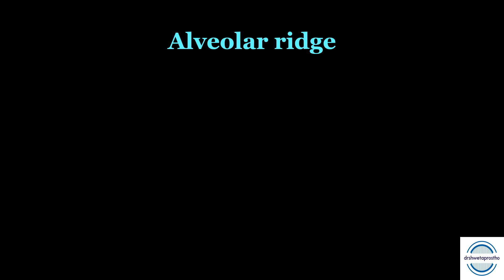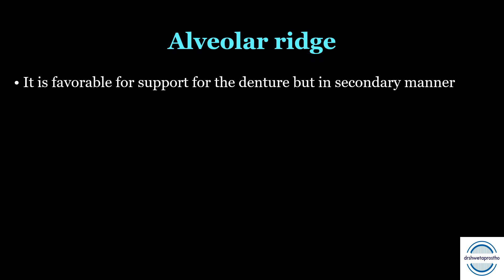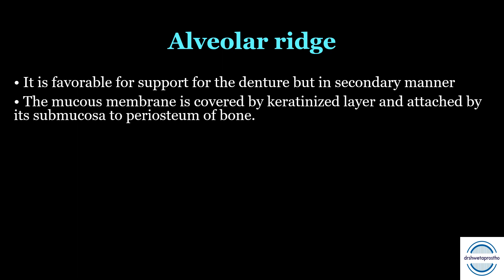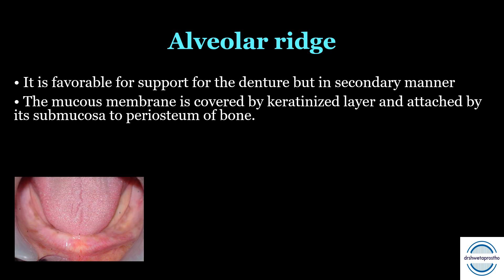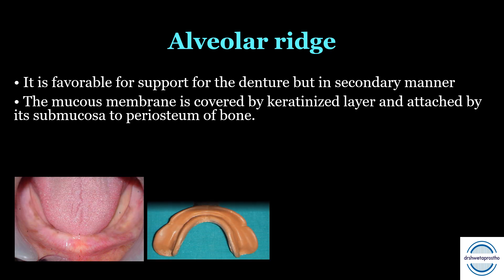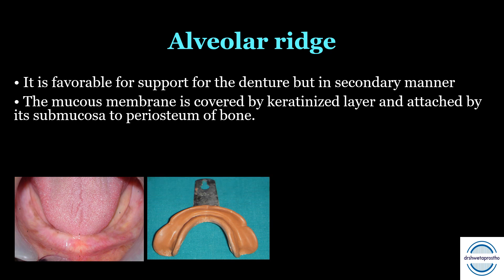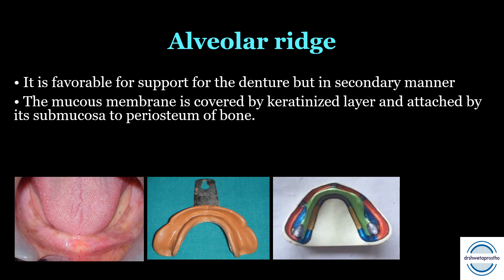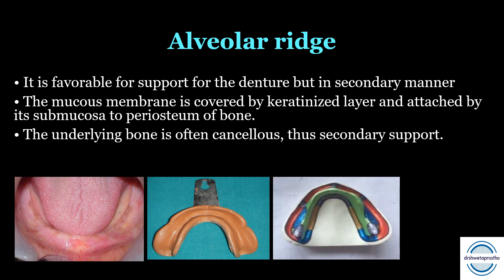The second supporting area is the alveolar ridge, which is favorable for denture support but in a secondary manner. The mucous membrane of the alveolar ridge is covered by a keratinized layer and attached by its submucosa to the periosteum. It is obtained as alveolar groove in the impression, and the green part on the cast is the alveolar ridge. The underlying bone is often cancellous, which is why it offers secondary support — this also depends on the form of the alveolar ridge present in the patient.